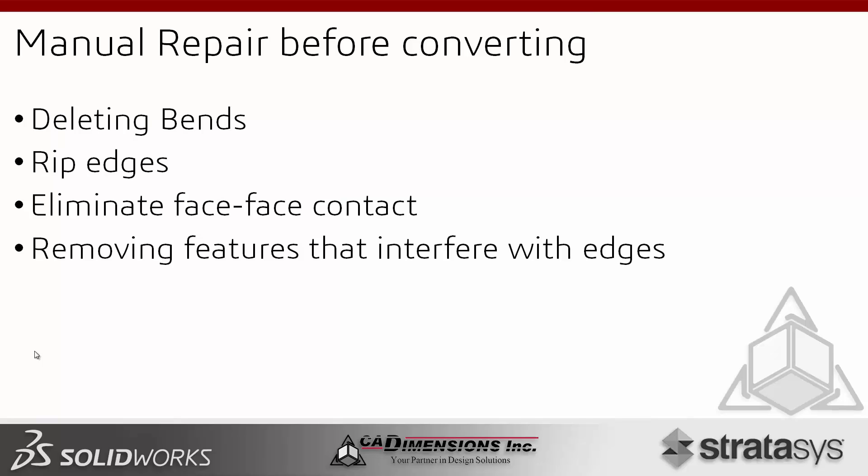I'm going to walk you through converting to sheet metal using both tools, and then we'll discuss what to do if neither of those tools work — how you can manually repair sheet metal parts so you can convert them. One technique I want to highlight is deleting bends. It's a tool I like to use a lot; it works extremely well and is probably the one I've recommended and used the most over the years.